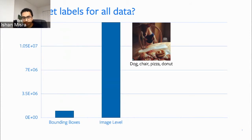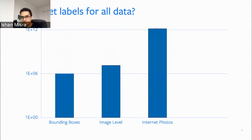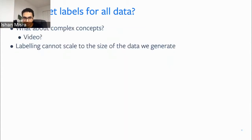But what about images on the internet? That number is basically really, really large — you're not even able to see the bounding boxes or image-level annotations on a linear scale. If you change to log scale, you can see the scale we're dealing with. If ImageNet's 14 million images took 22 human years to label with a small amount of concepts, it's really hard to label internet photos or the real world with complex labeling. Labeling just does not scale to the size of data we generate or the complex concepts we have.